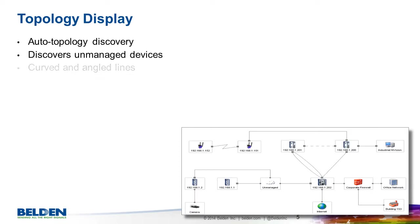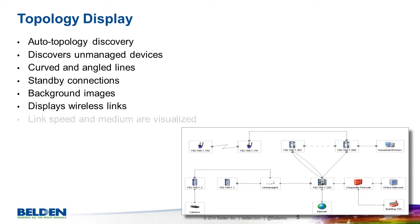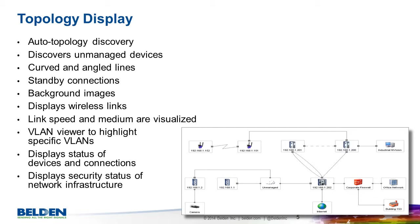Automation engineers are interested in physical networks, so probably the most important function of Industrial HiVision is its topology maps. These maps offer a level of detail that is never seen in office applications. Industrial HiVision uses the standard Link Layer Discovery Protocol, or LLDP, to recognize how devices are connected to each other. But in industrial networks it's still common to use unmanaged switches, which do not support LLDP. So Industrial HiVision discovers and maps unmanaged switches by reading the learned address tables, or forwarding databases, of the managed switches. Using a proprietary algorithm, Industrial HiVision can display exactly where unmanaged switches are located.